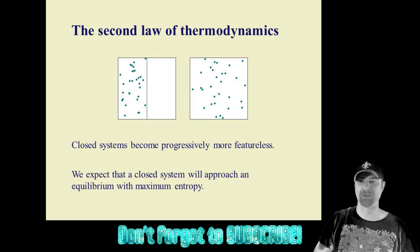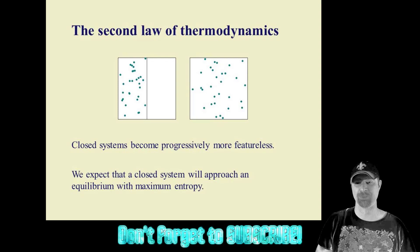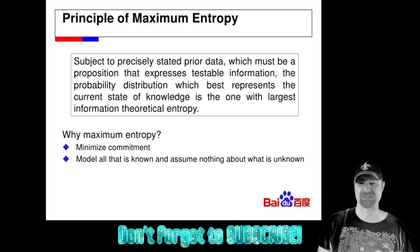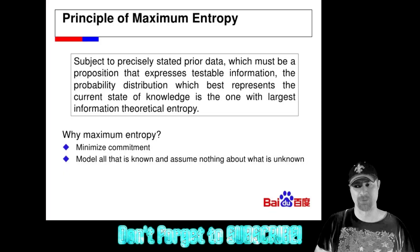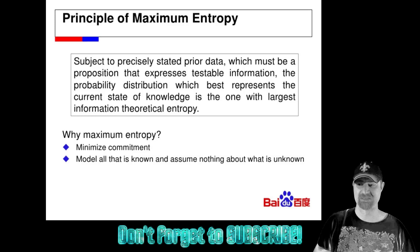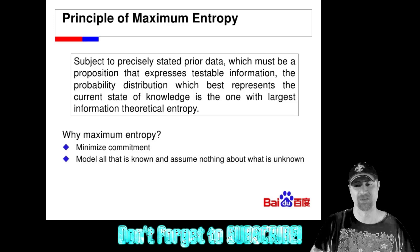While the second law only applies to closed systems, both open and closed systems seek a state of maximum entropy. The difference is that, in a closed system, thermodynamic equilibrium is the maximum entropy state. Open systems, however, never reach thermodynamic equilibrium because energy is added to the system. Instead, the system will seek the state with the maximum amount of entropy in it given the constraints of the system.